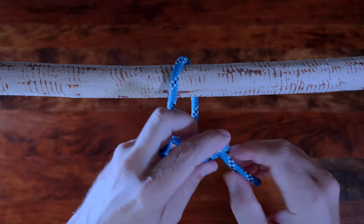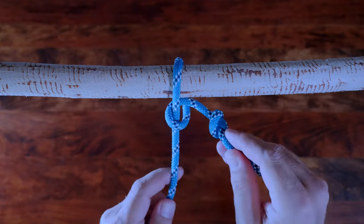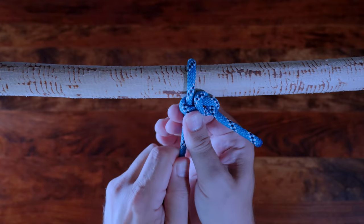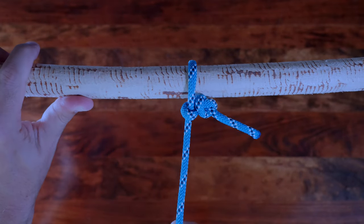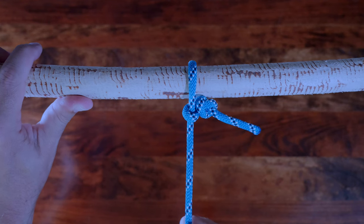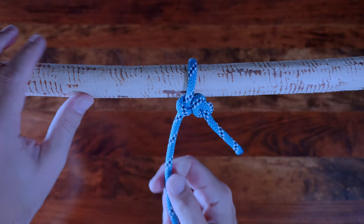It is possible to make the half hitch knot a little more secure by adding a stopper knot. In this case, I'm just adding a simple overhand knot to the end of my working line. Truth is, if you want to make this knot more secure, you should probably just tie the two half hitches knot.